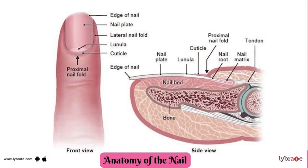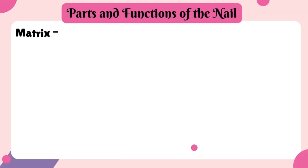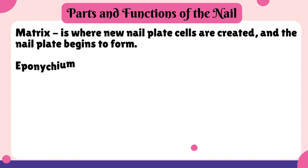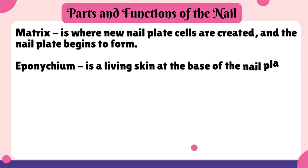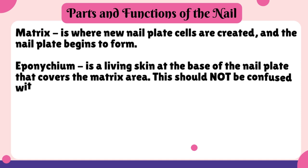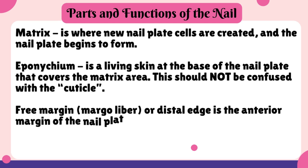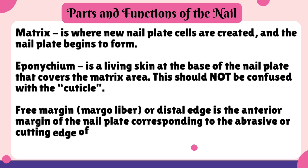A. Anatomy of the Nail. Parts and Functions of a Nail. Matrix is where new nail plate cells are created and the nail plate begins to form. Eponychium is a living skin at the base of the nail plate that covers the matrix area. This should not be confused with a cuticle. Free margin, or distal edge, is the anterior margin of the nail plate corresponding to the abrasive or cutting edge of the nail.